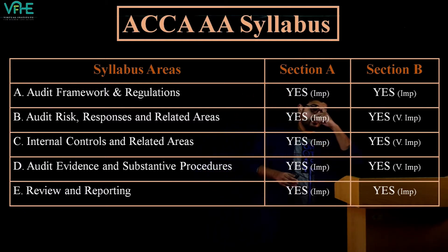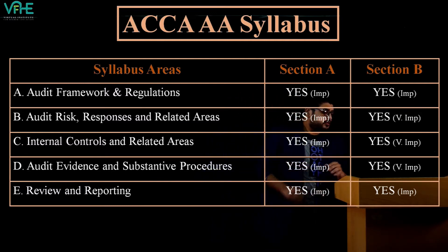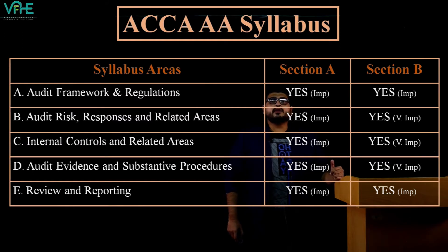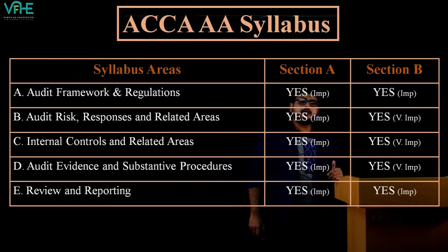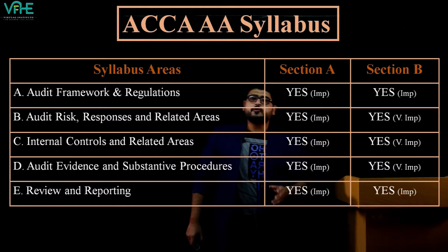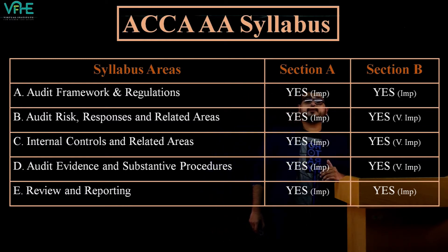When we start the syllabus officially, I'll explain the syllabus areas first. Section B is really very important — 70 marks versus Section A's 30 marks. The examiner focuses on Section B because once you complete this paper, you're expected to work in an audit firm, so you need a very good understanding of it.